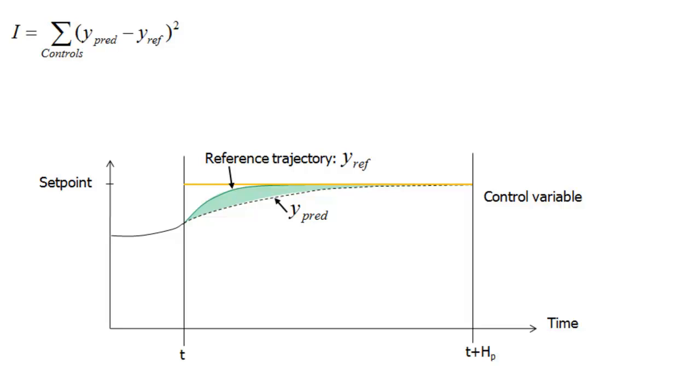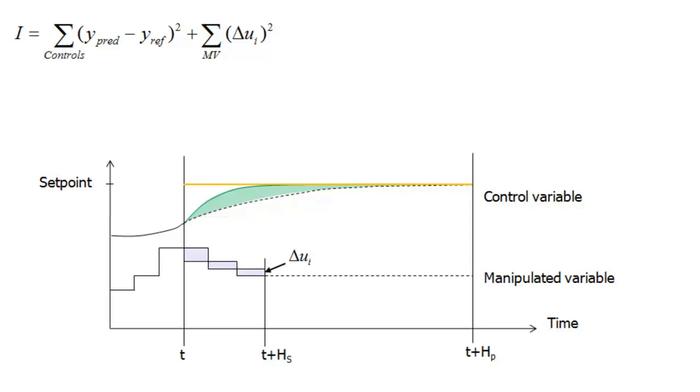We repeat the whole process, for instance, for a manipulated variable, the manipulated variable that we will change ourselves. We account for the changes from one time step to the next and we do that for all the manipulated variables in the system.